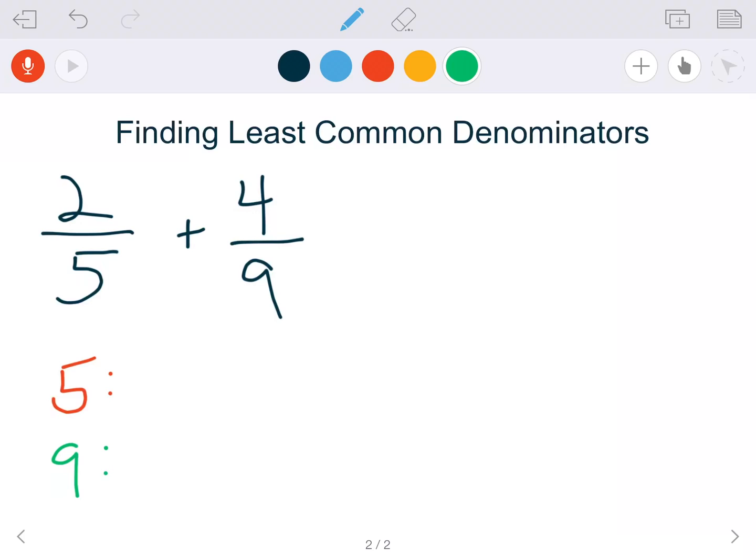Finding the least common denominator is very important when you're trying to add two fractions that don't have the same denominator. In order to add fractions with unlike denominators, they have to have the same number in the bottom.